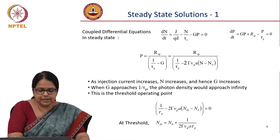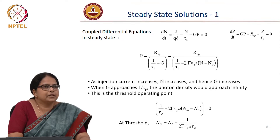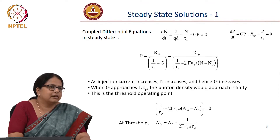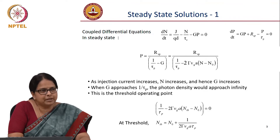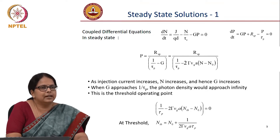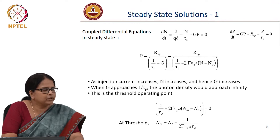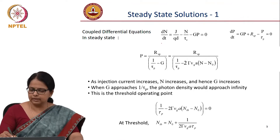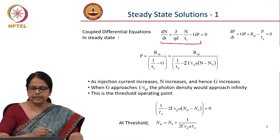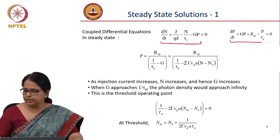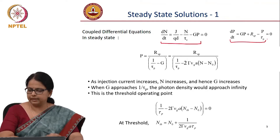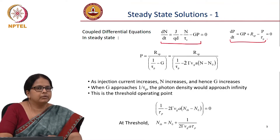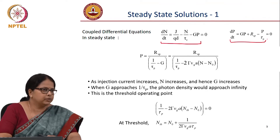We start from where we left. We are in the process of finding out the power output of a laser. We also want to find out the modulation bandwidth of the laser, because we claim that the laser is supposed to have a higher modulation bandwidth when compared to LED. We wrote down the rate equations — one for the carrier density and the other for P, where P represents photon density, the number of photons per unit volume.